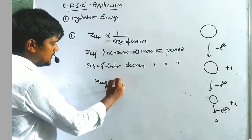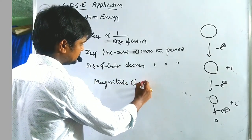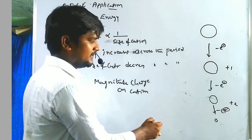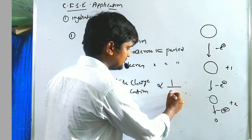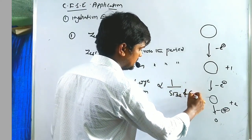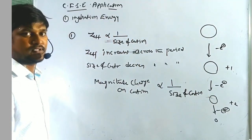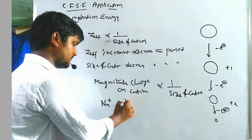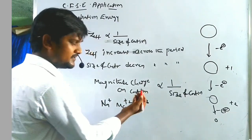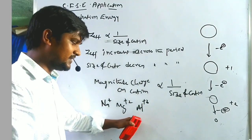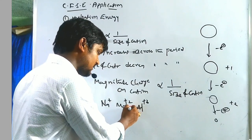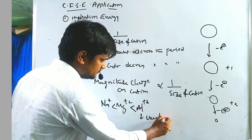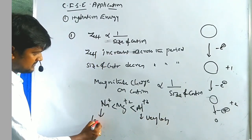Another property: as the magnitude of charge on the cation increases, atomic size decreases. The best example is Na⁺, Mg²⁺, Al³⁺ — among these three, Al³⁺ has the very smallest size, while Na⁺ has the largest. More magnitude of charge means lesser size; less magnitude of charge means higher size.